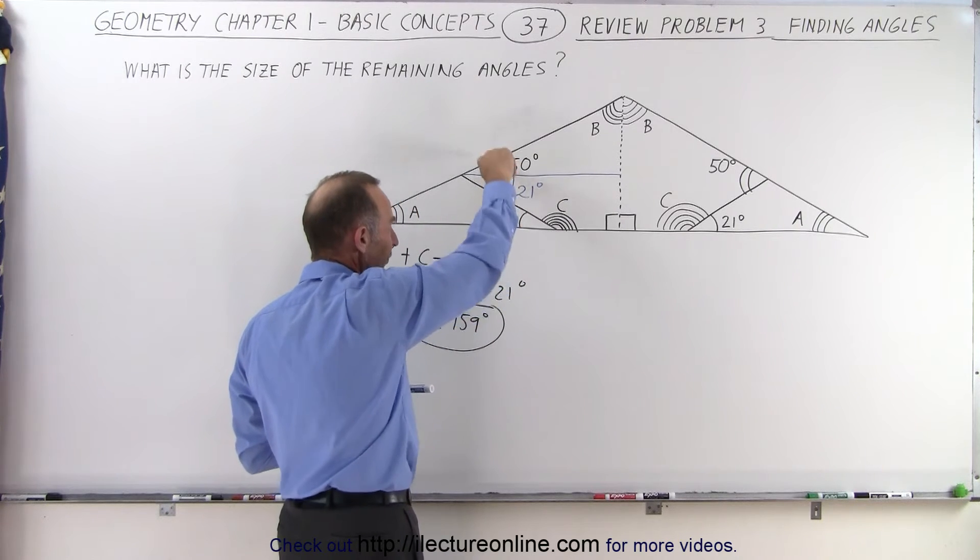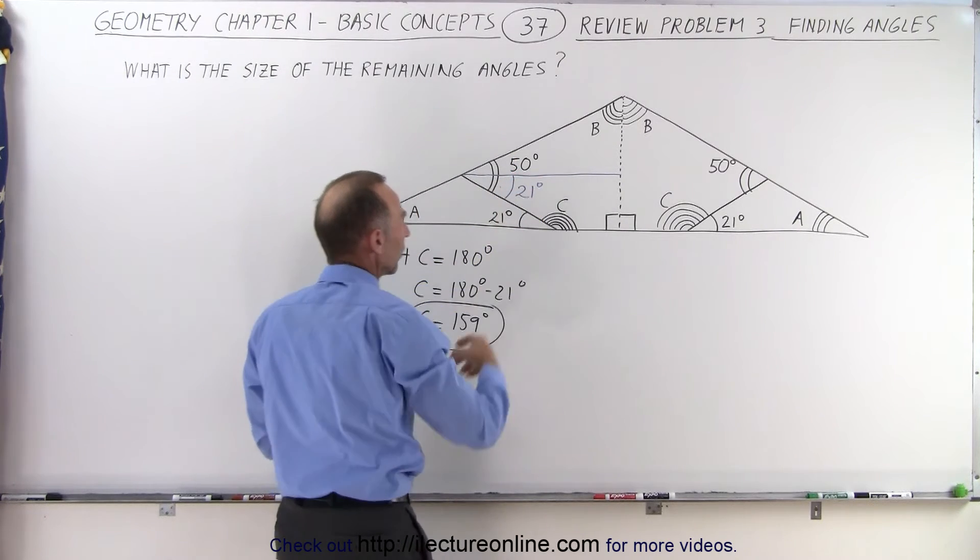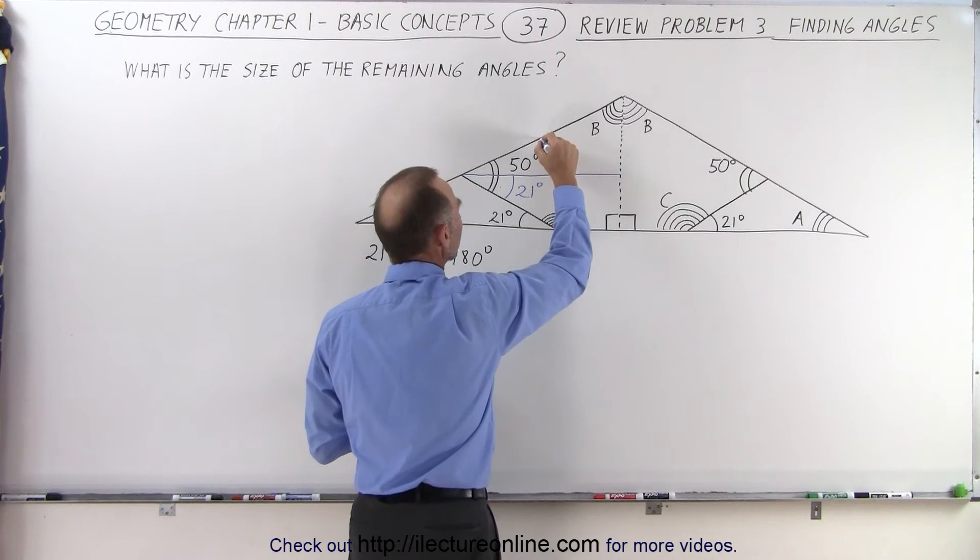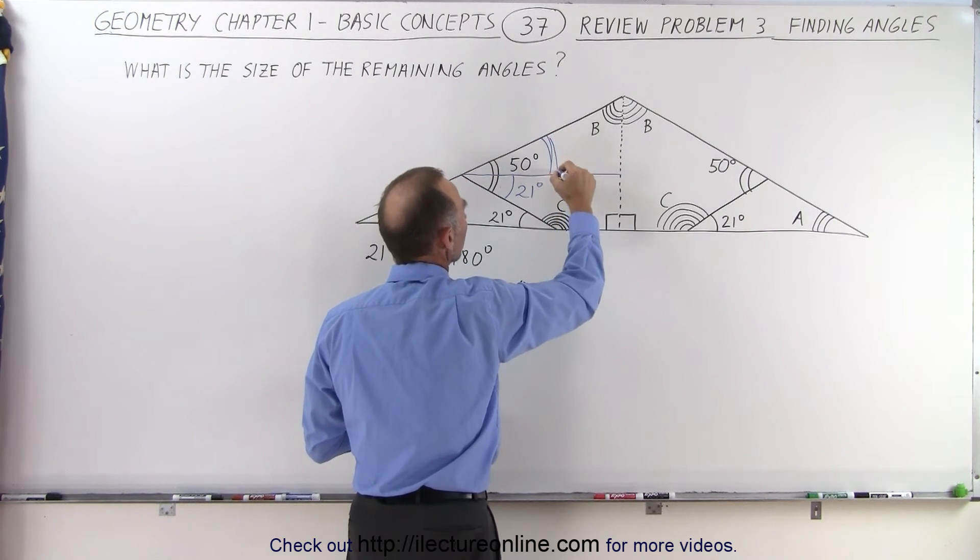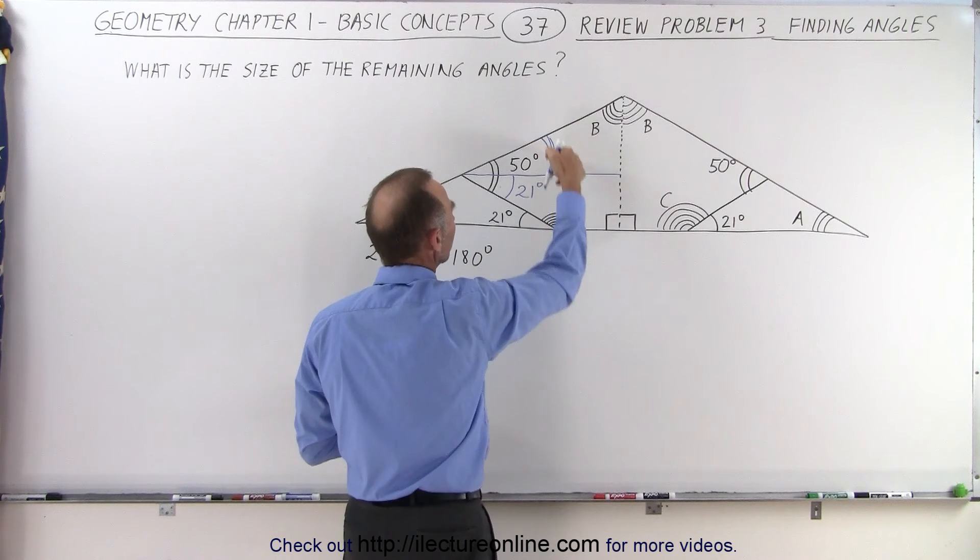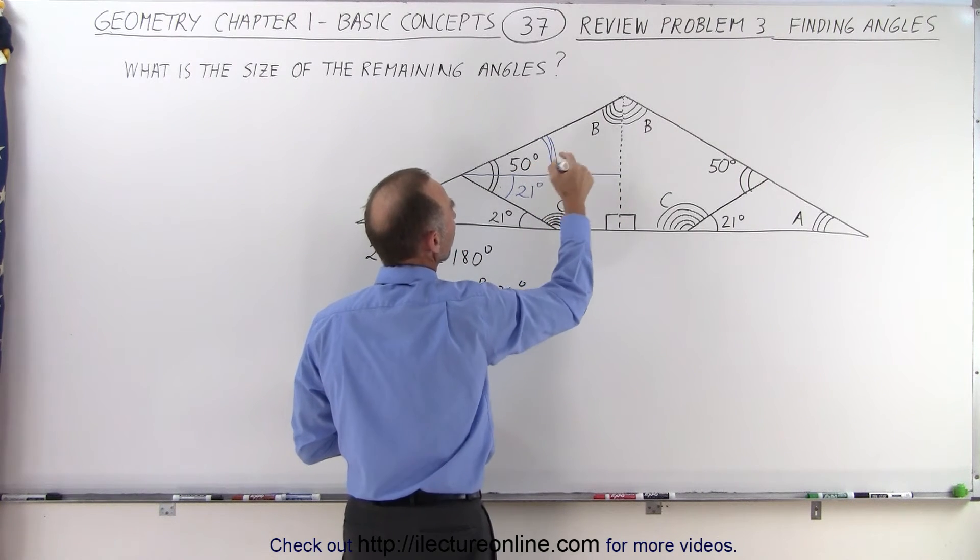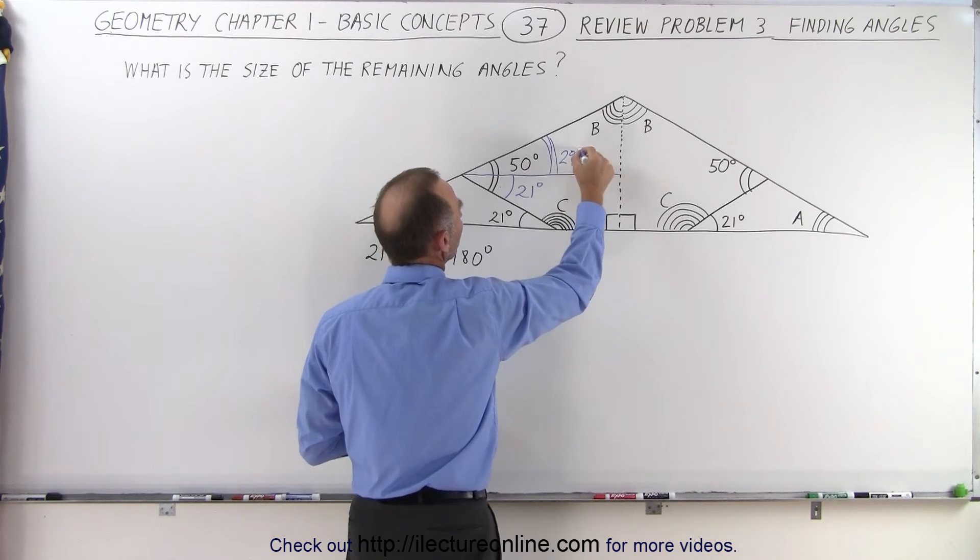Since this whole angle is 50 degrees and this one is 21 degrees, that means that this angle here should be 50 minus 21 or 29 degrees.